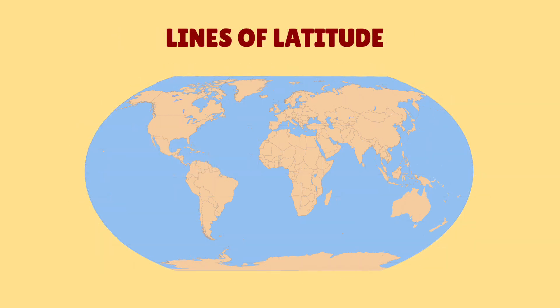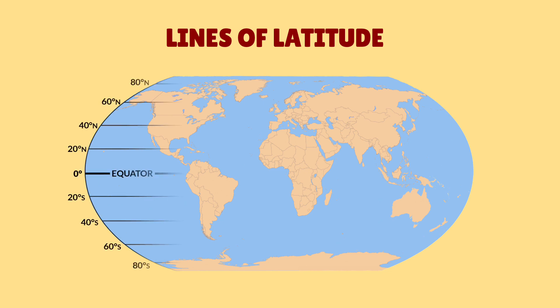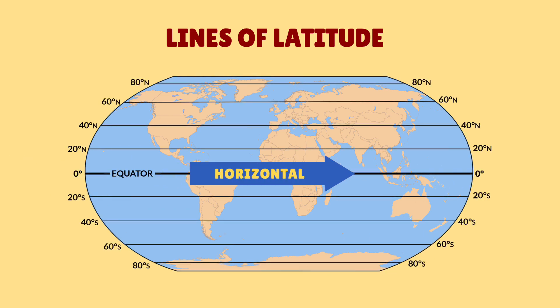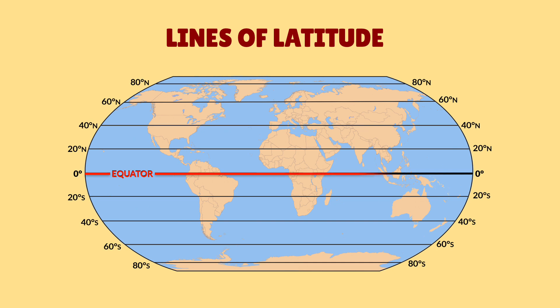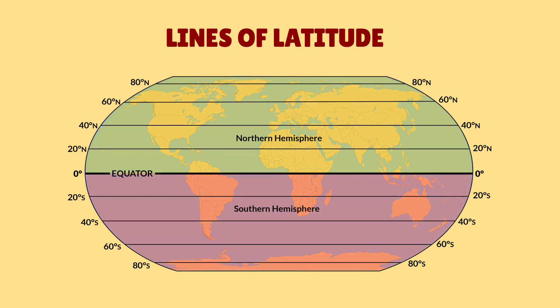Let's talk about latitude. Lines of latitude run west to east and are horizontal. The equator is a special latitude line at zero degrees. The other latitude lines show how far north or south a location is from the equator, with the distance measured in degrees. The area above the equator is known as the northern hemisphere, and the area below the equator is known as the southern hemisphere.